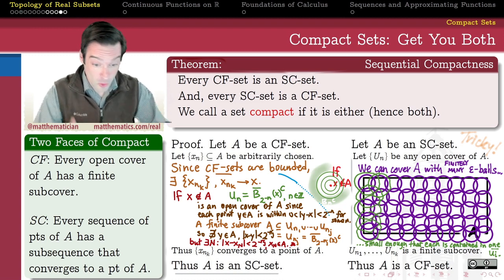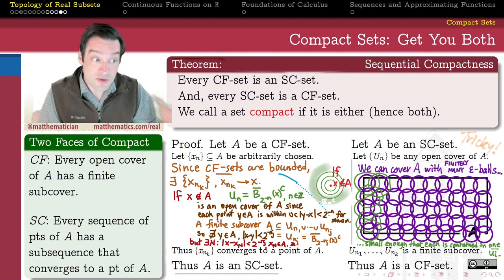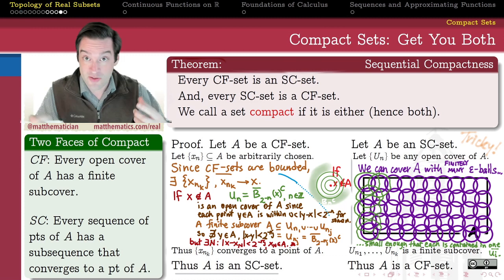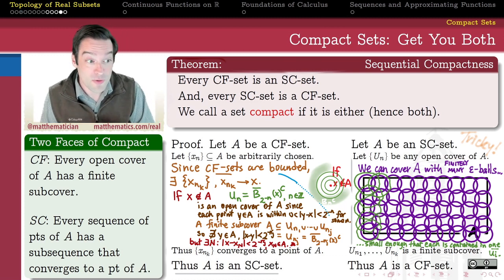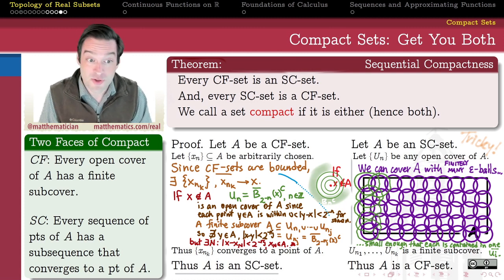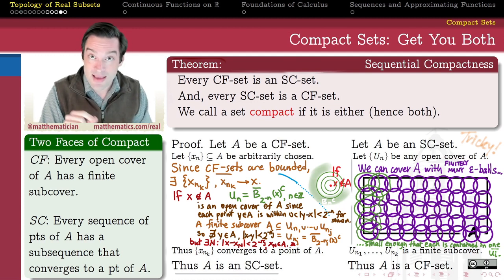This is how compact sets work. What's so great about this equivalence is that if I want to prove something is compact, I can use either characterization — whichever lends itself better to the problem at hand. When convenient, compactness means cover finiteness: every open cover has a finite subcover. And when convenient, compactness means subsequential completeness: every sequence of points in the set has a subsequence that converges to a point in the set. Either notion always means exactly the same thing as the other, and both mean compactness.